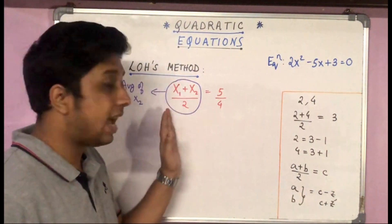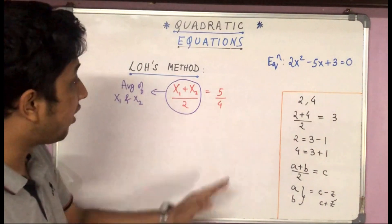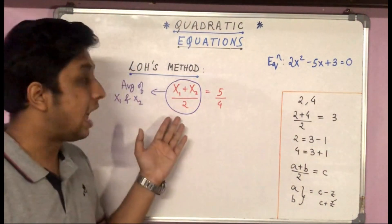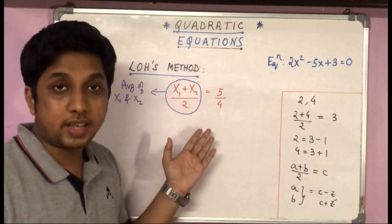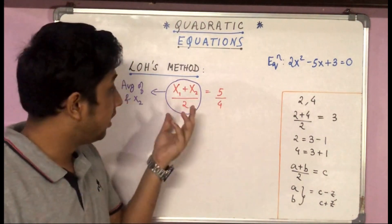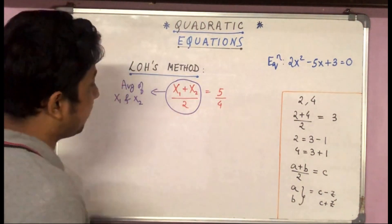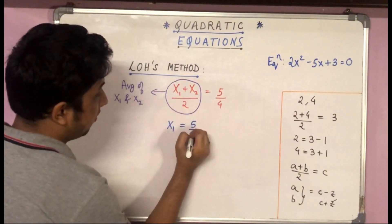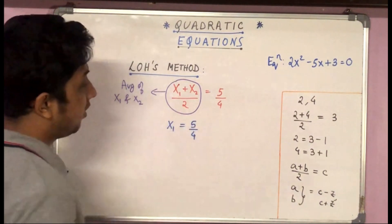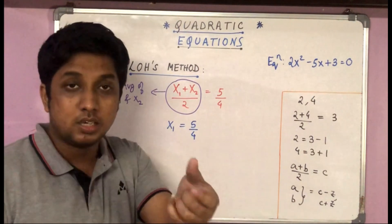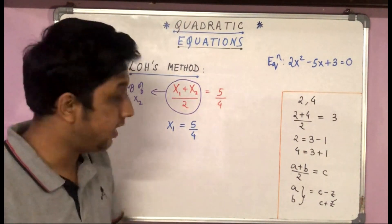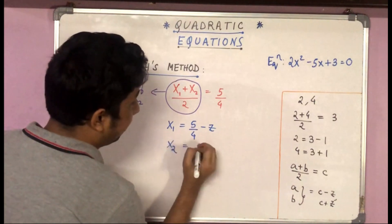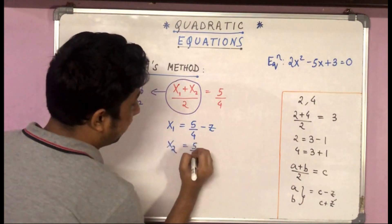Using this same logic: the average of x₁ and x₂ is 5/4. That means x₁ and x₂ can be expressed as (5/4 − z) and (5/4 + z), where z is a particular fixed number.